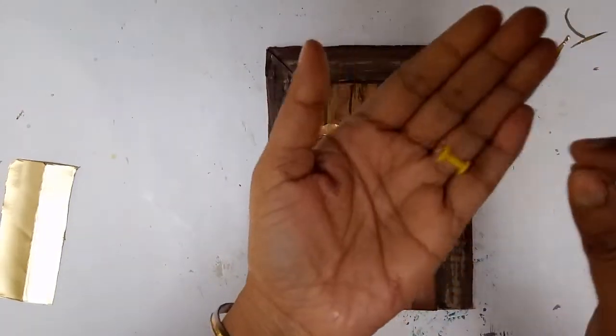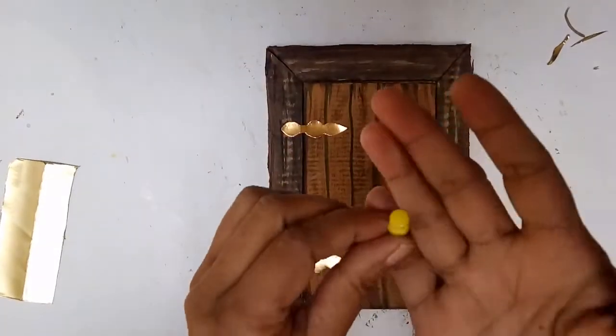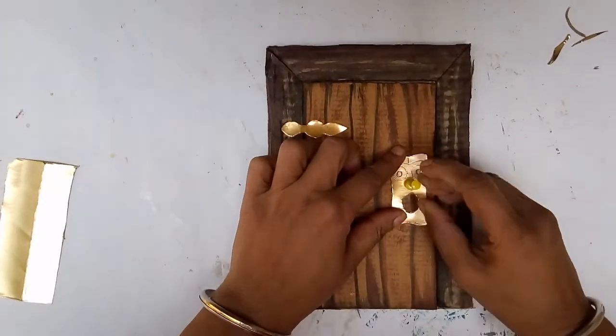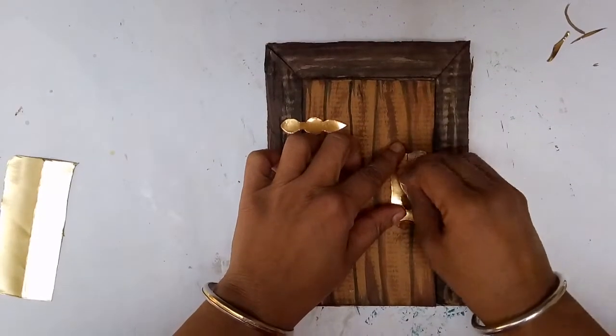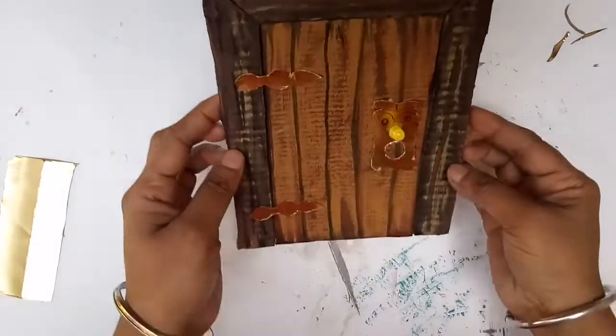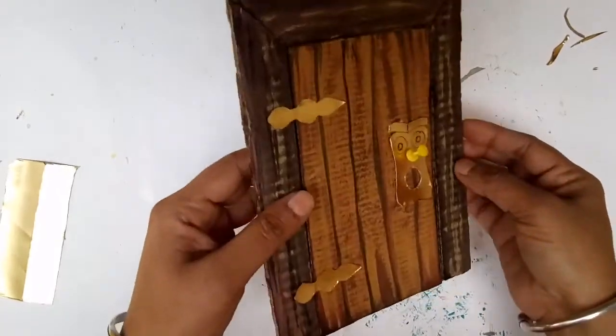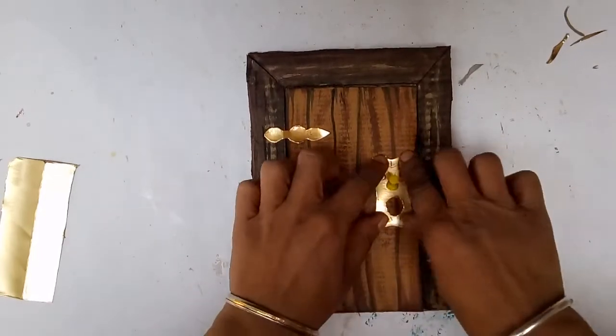Now this is an ordinary thumbtack pen for notice boards and I am going to use this to make the nose and poke it right through. It depends how you want the nose to go. I just made it slightly at a slant and then I am going to paint it.